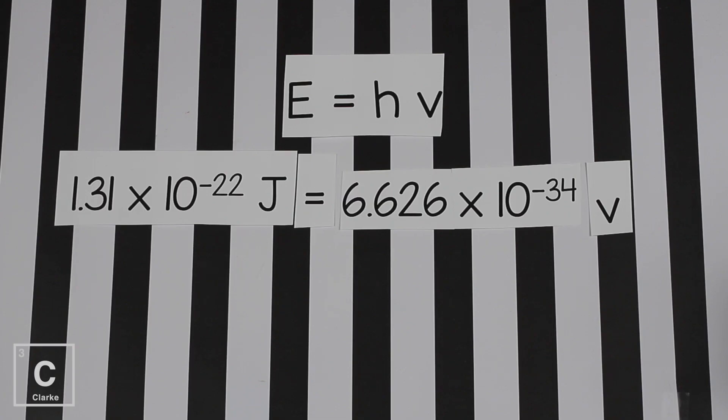Let's set this problem up. We just put the numbers in the spots where the variables are. In energy spot, I put 1.31 times 10 to the negative 22nd joules. In H's spot, remember that's Planck's constant, that number is going to be given to us just like the speed of light was given to us. 6.626 times 10 to the negative 34. Since we're solving for frequency, we left in Greek letter nu.